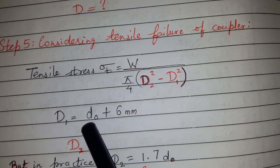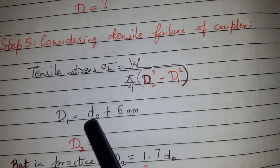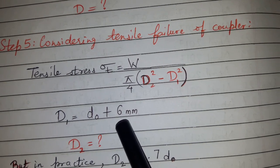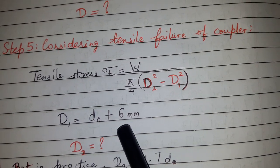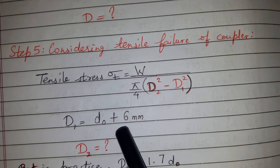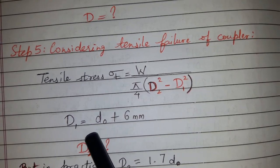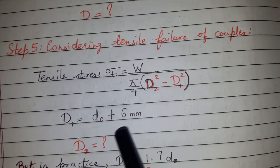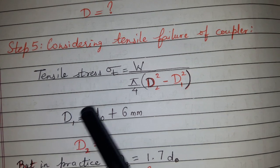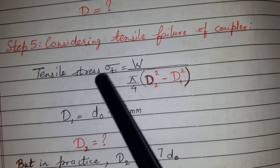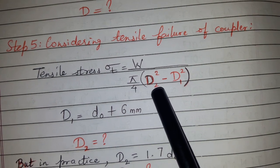D1 we can find by the formula: D1 equals D0 plus 6. Actually, the range is we can take 6 or 7 or 8, so we can take it as 6 mm. Once we get D1, we can put the value here, and others are known, so we can find D2.